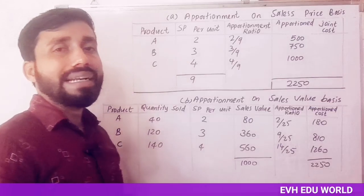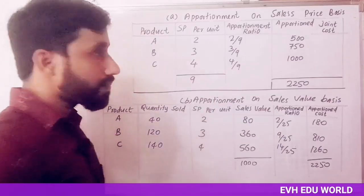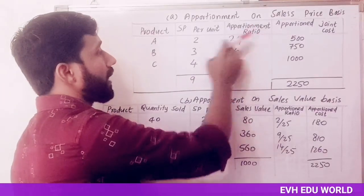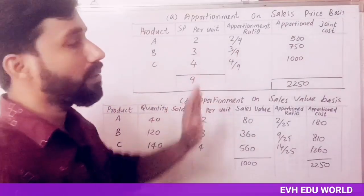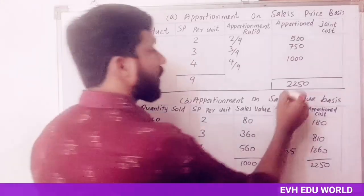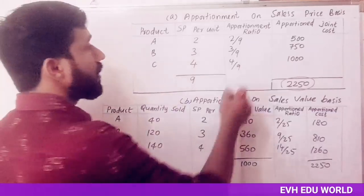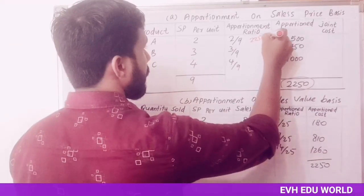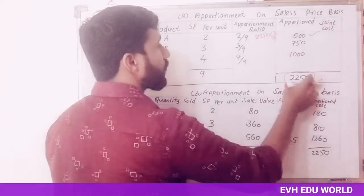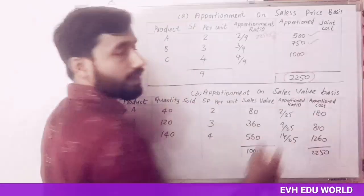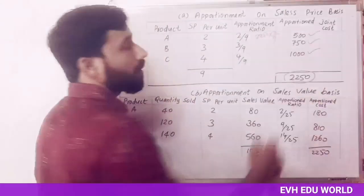The apportionment ratio is based on the total selling price per unit. The ratio is 2 divided by 9, 3 divided by 9, and 4 divided by 9. The total joint cost is Rs. 2,250. So the apportioned joint cost is: Rs. 2,250 × 2/9, Rs. 2,250 × 3/9 = Rs. 750, and Rs. 2,250 × 4/9 = Rs. 1,000.